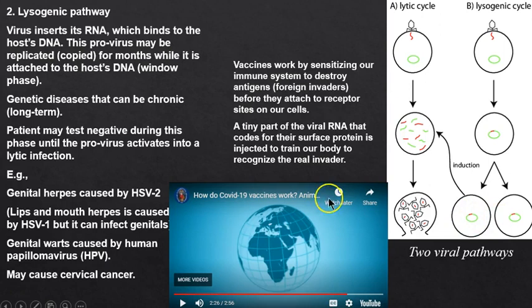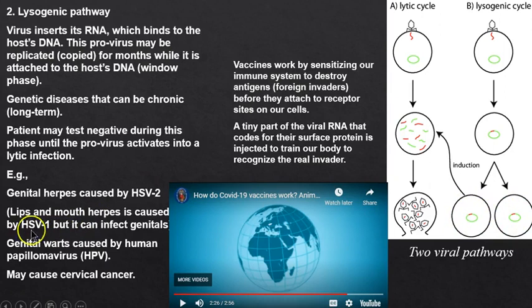Examples include genital herpes — herpes simplex virus type 2 — and HSV-1, which causes cold sores around the mouth. It's a very common form of lysogenic, and it lives on the ganglia around your mouth. Too much sunlight or worry can bring it to life. HSV-1 can also be transmitted during oral sexual activity, so be careful.